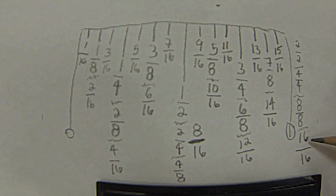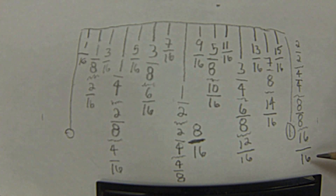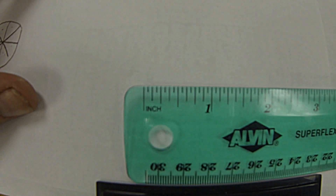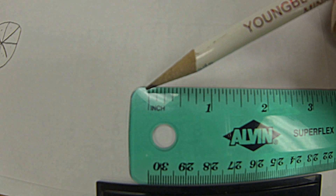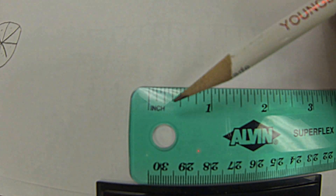Can you go smaller? Yes. This quantity would double again to a 32nd or even a 64th. But on most rulers you'll have, the smallest division between 0 and 1 is a 16th of an inch.